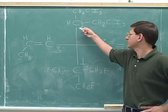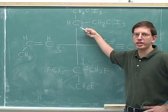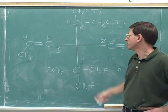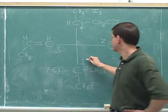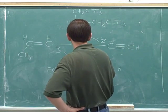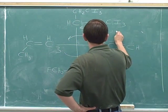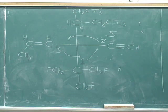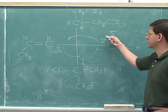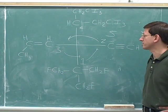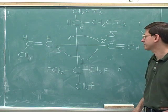The number four priority is on the vertical line pointing away from us, so there's no need to make any swaps. We just look at the configuration on the page. One to two to three are arranged counterclockwise, which is S. And there's no need to cross this letter out because we haven't made any swaps. So the correct configuration of the stereocenter is S.